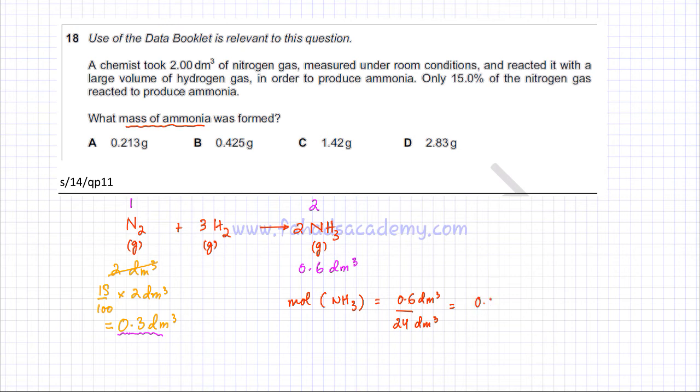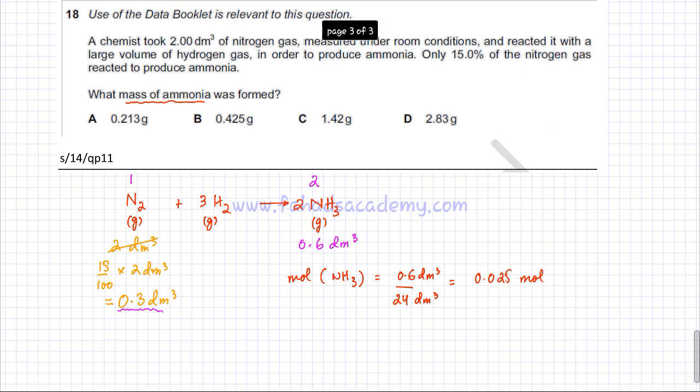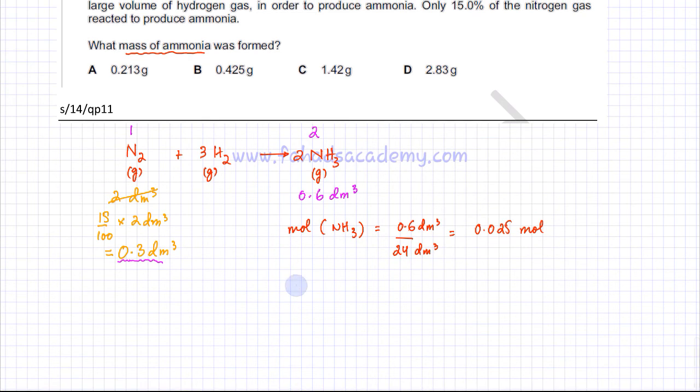So you have 0.025 moles of ammonia and the next step is you need to find the mass of ammonia. Mass is equal to moles multiplied by the Mr. So you have 0.025 moles multiplied by the Mr of ammonia which is NH3 has one nitrogen which is 14 and three hydrogen. So it's plus one plus one and plus one, so hydrogen is one. That's the Mr which is 17. So it's 0.025 multiplied by 17 and the answer that you get is 0.425 grams.